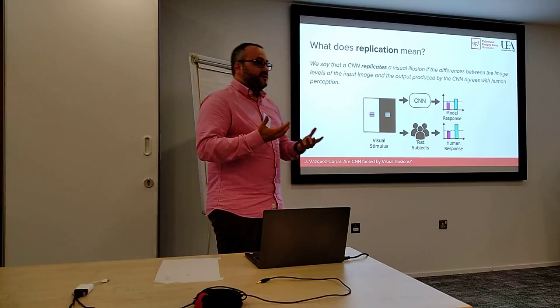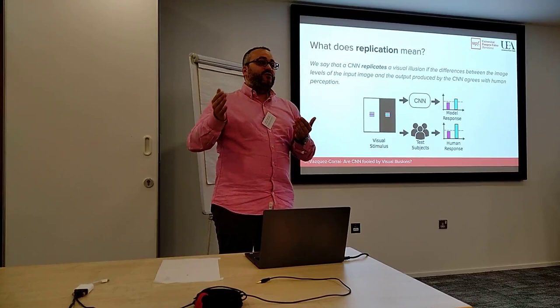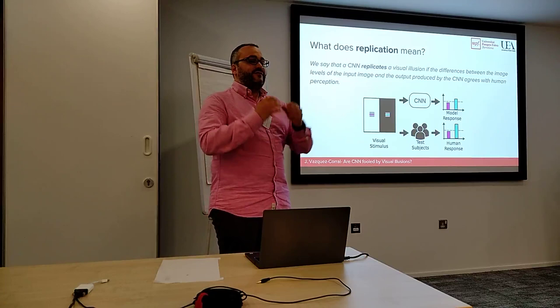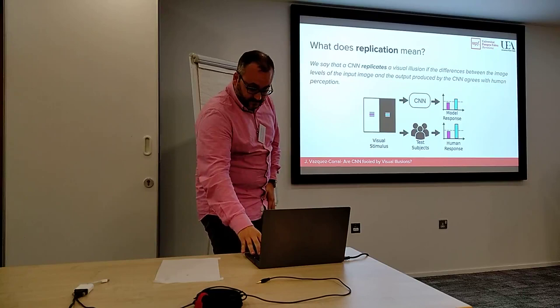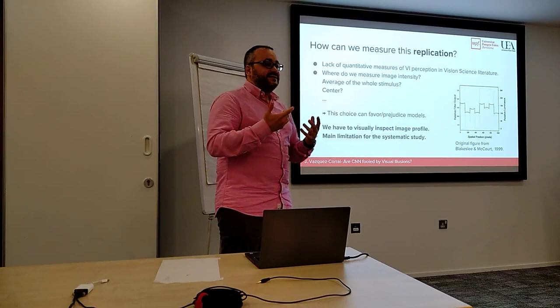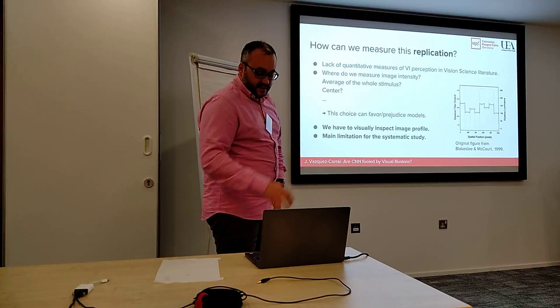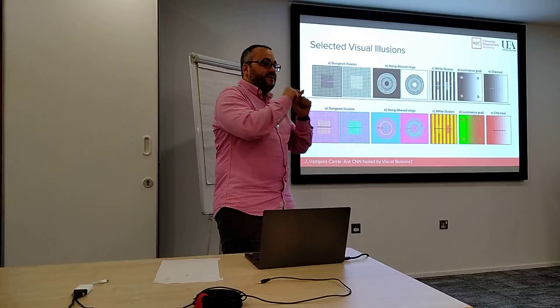What do we mean by replication? It is difficult to quantize, but we say a CNN replicates a visual illusion if it moves the output in the same direction that the human perceives the image. For example, if something that is dark gray appears even darker in our perception, we are satisfied if the CNN also predicts darker values. We measure this following an image profile — looking at pixel values along a line — because it's difficult to quantize the exact amount of replication.